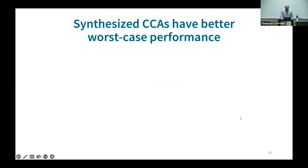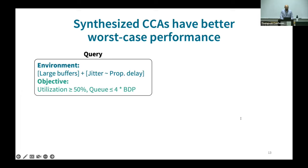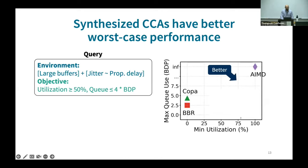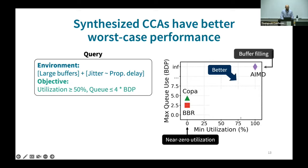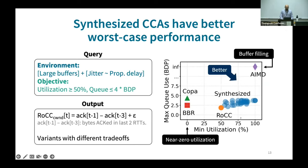Our preliminary evaluations with our prototype tool have yielded promising results. We asked our prototype to synthesize CCAs that achieve high utilization and low delay on networks with a deep amount of buffering and jitter that can be as large as the propagation delay — settings where prior work has shown large jitter can fool existing CCAs to achieve close to zero utilization. For this query, our prototype reproduced a known algorithm called DROC and its unknown variants that achieve different throughput and delay tradeoffs.